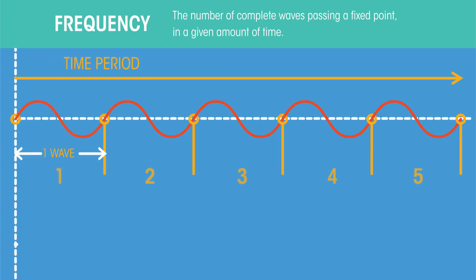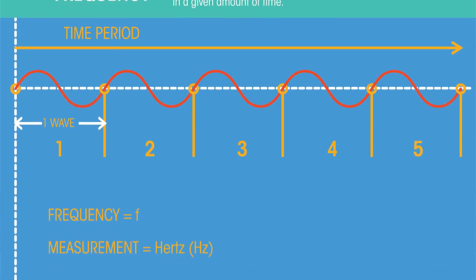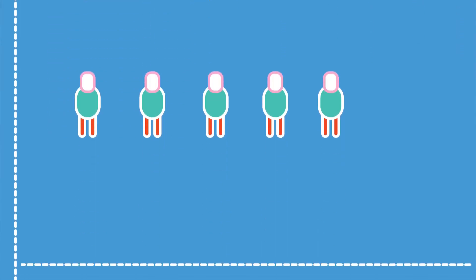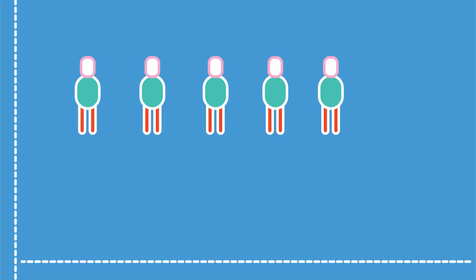So if this was our time period, the frequency would be five. Frequency is given the symbol F and is measured in units called Hertz. Hertz measure how many complete cycles per second. So how many people in our Mexican wave stand up every second.